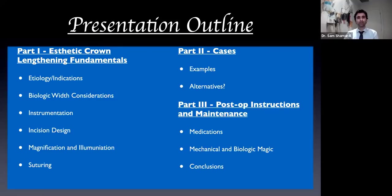Here's the overall outline for tonight's course. Part one covers fundamentals for aesthetic crown lengthening, background on etiology, indications, and biologic width. Part two will look specifically at cases with examples in detail. As a bonus, we'll talk about alternatives — cases where aesthetic crown lengthening itself may not be enough to solve an extreme gummy smile. And our last section covers post-op and maintenance, wrapping up with conclusions.